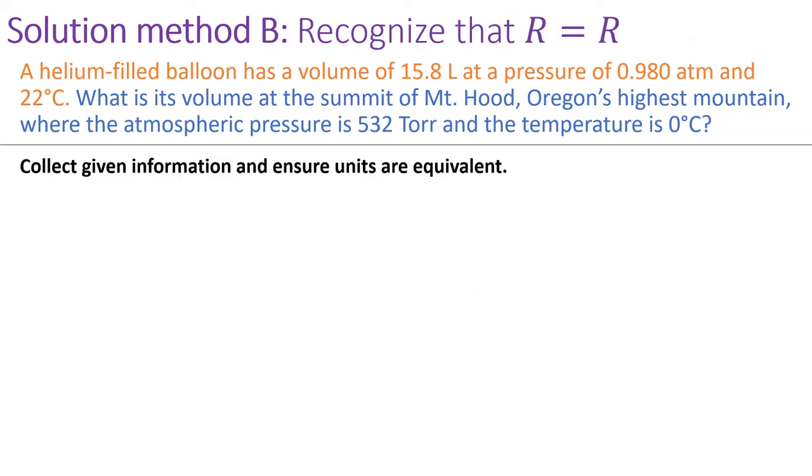The faster way to solve this problem is to recognize that PV over NT equals the ideal gas constant, whether we are in Portland or at the top of Mount Hood. And since we're not taking any helium atoms out of our balloon, then the moles of gas remain the same too. In other words, imagine two PV over NT functions. One with the information in orange from the bottom of the mountain and the other with the information in blue from the top of the mountain.